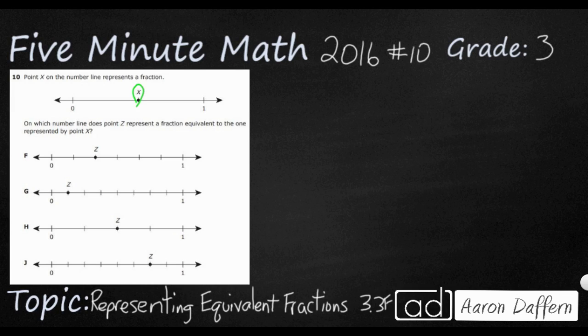And then we need to find a number line, F, G, H, or J, where point Z has an equivalent fraction to the one represented by point X.